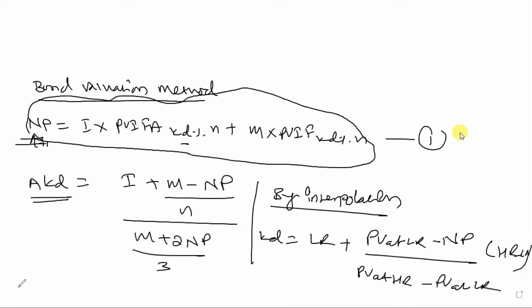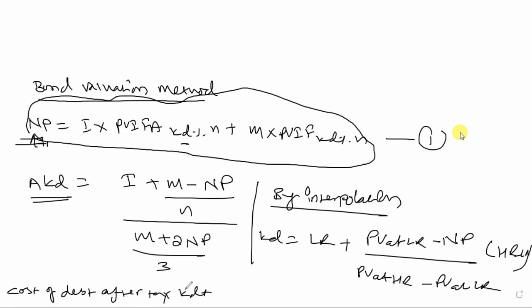Cost of debt before tax gives us KD. Cost of debt after tax is KDT, computed as KD times one minus the tax rate. So KDT equals KD multiplied by one minus tax rate.